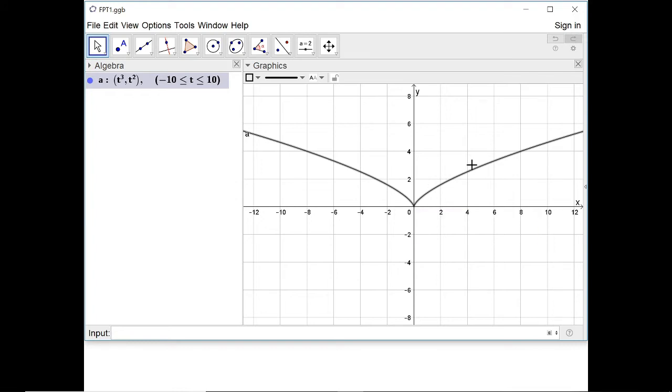So to prove it's a cusp, first of all I need to show that the origin is actually on my curve. And then I need to find out that the gradient as I tend to zero from above is the same as the limit in the gradient as I tend to zero from below.